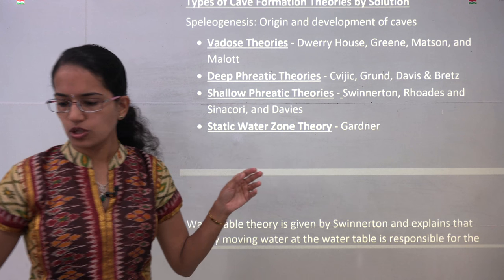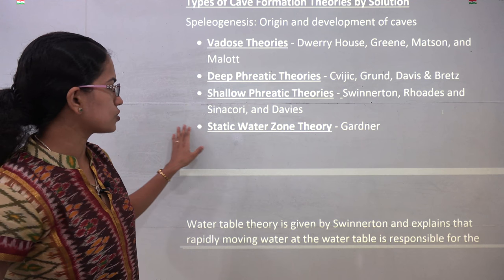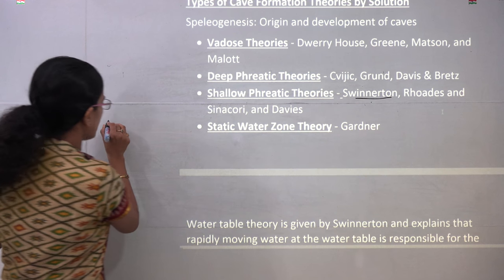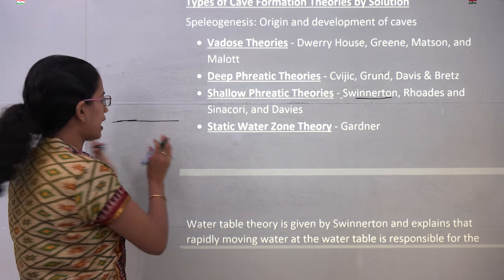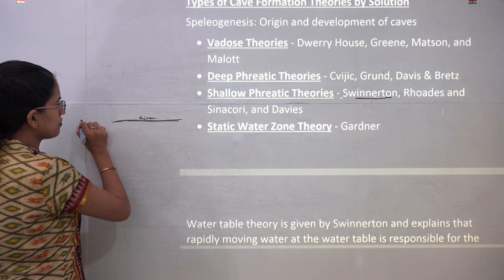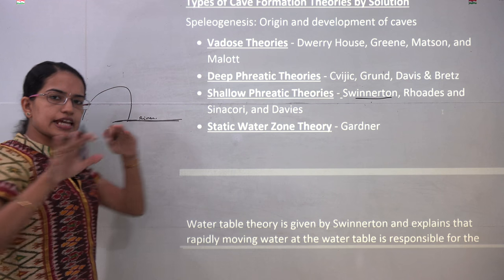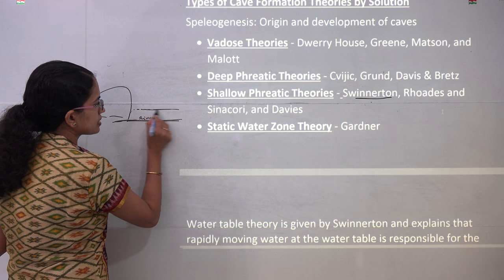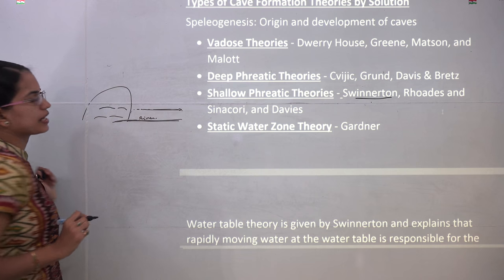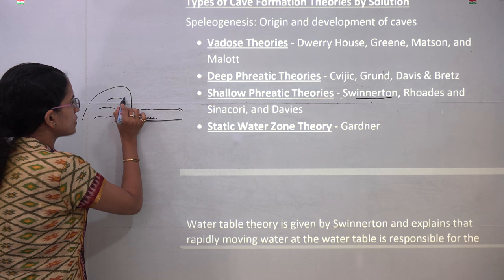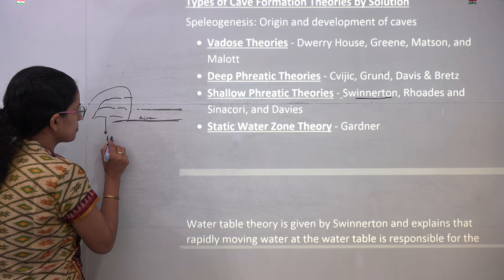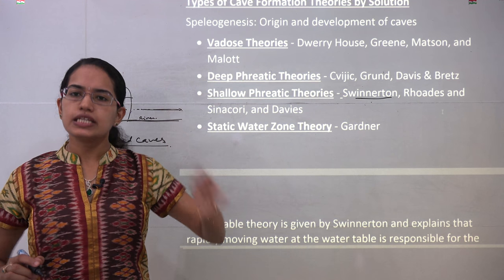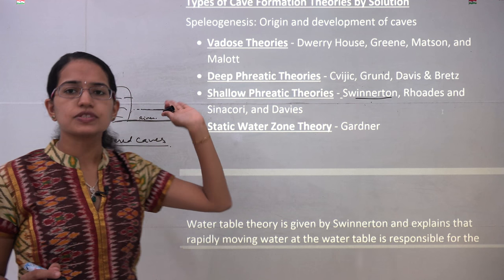Swinnerton was one of the major proponents of the theory being propounded under the shallow phreatic zone. What he tried to explain was the changes in the elevation of the water table. On the board: you have the river running here, and parallel to the river you have a mountain. Water would be at the same level both under the mountain and in the river — so you have caves formed here. Now the level of the river increased, and you would have caves at this new level in the underground topography. Because of that, you can see tiered caves formed, and he talked about the changes in the water table level governing cave formation within the highland or upland.